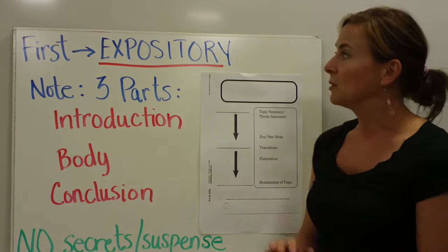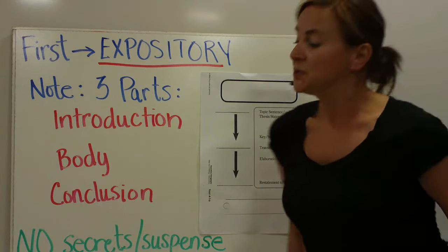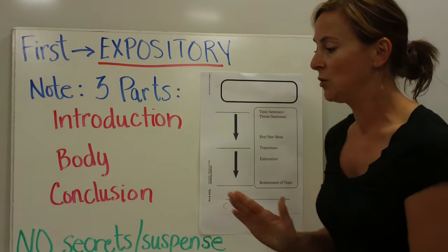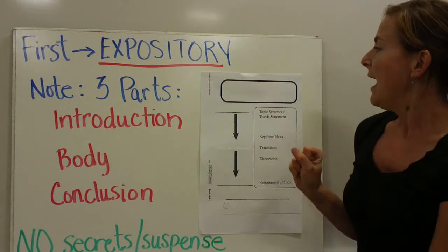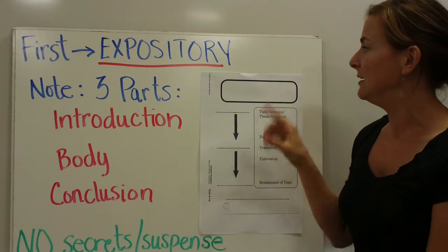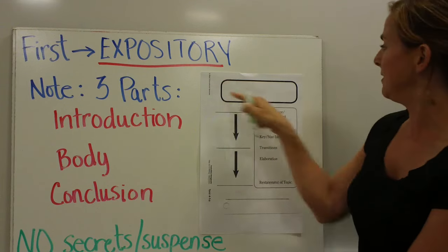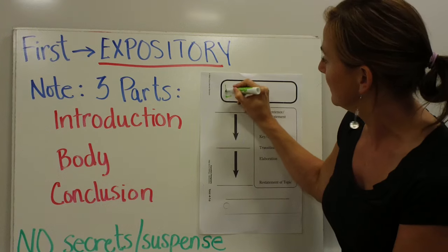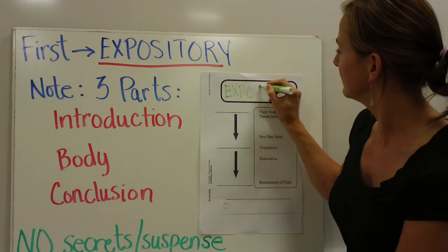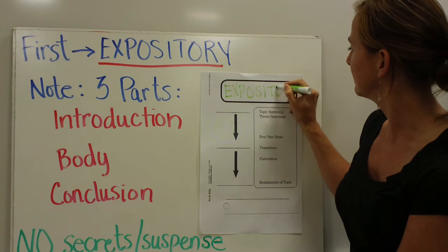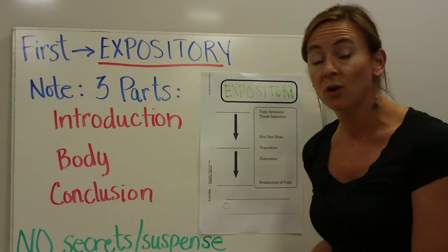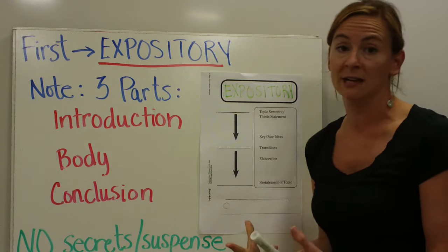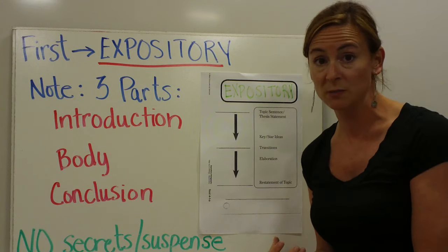First we're going to start with expository writing, and so you'll look on your handout for 1a, and if you go to the left-hand side, you are going to write in this bubble expository, making sure you've spelled it correctly, as again it's an academic vocabulary word you are responsible for knowing.